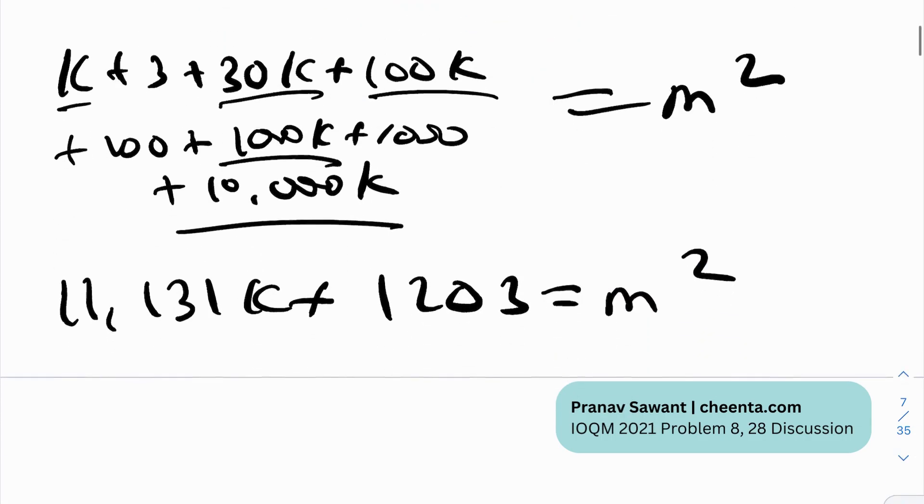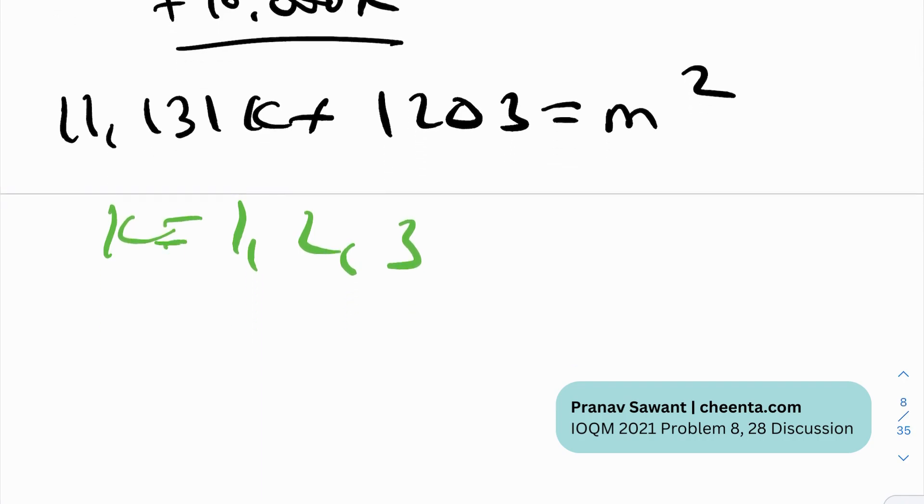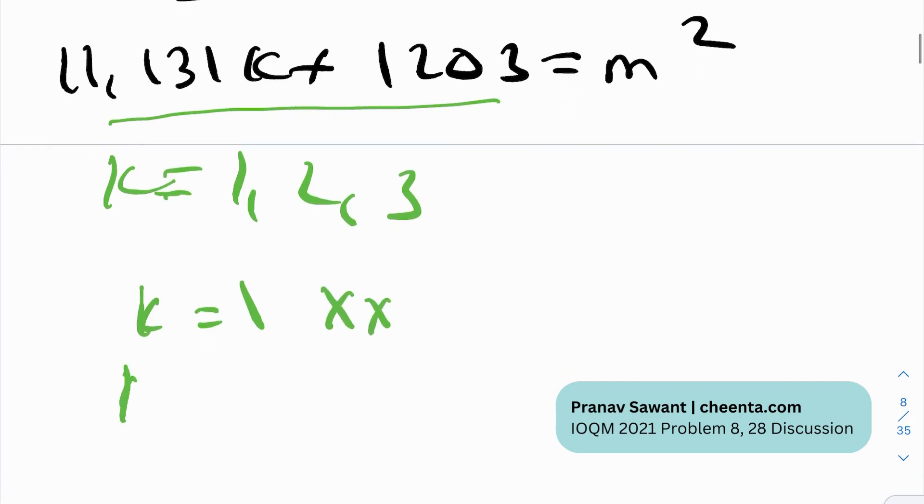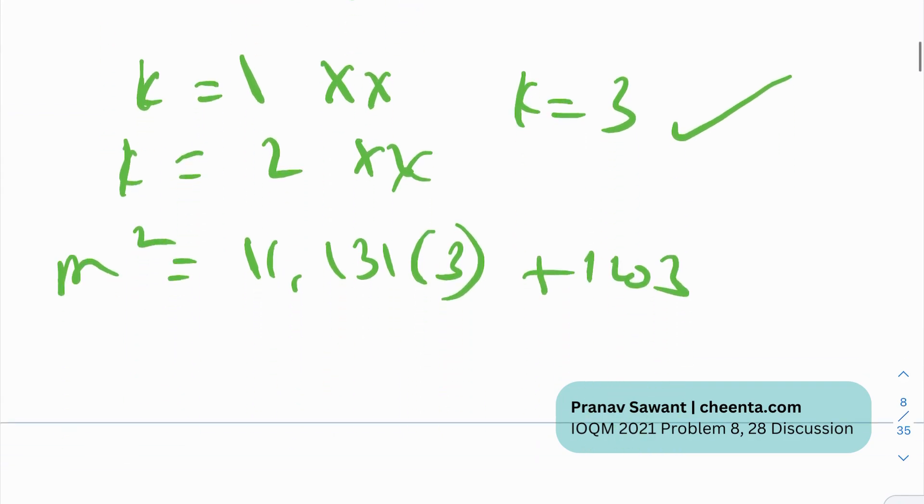And after this point, you really don't need to do anything much. You don't need to factorize this or anything. You know that k is equal to 1, 2, 3. These are only the three cases of k. You can just plug it in and check it out. For what value of k this gives a perfect square. And k is equal to 1 does not give a perfect square. So this expression is not a perfect square for k is equal to 1. And neither is it for k is equal to 2. But for k is equal to 3, you actually get a perfect square. So m squared is 11,131 times 3 plus 1203. And if you actually do the math, do some calculations over here, m squared becomes 34,596.